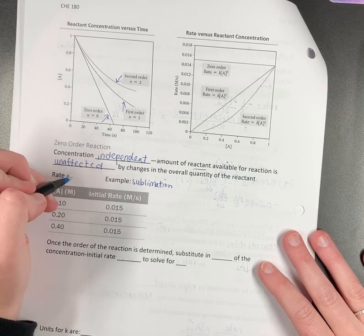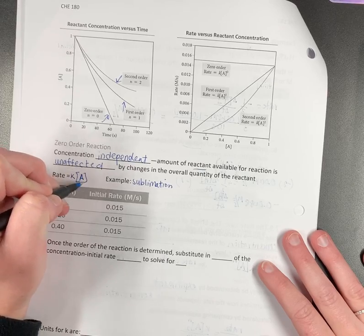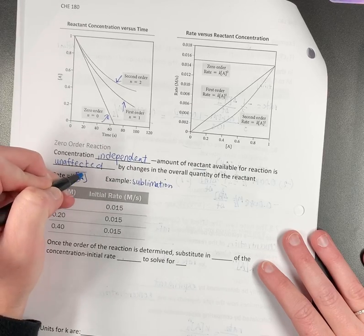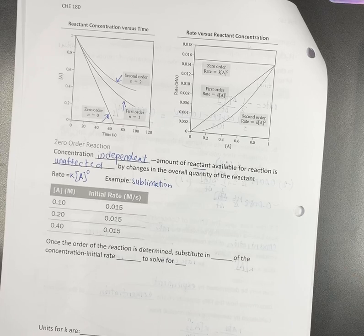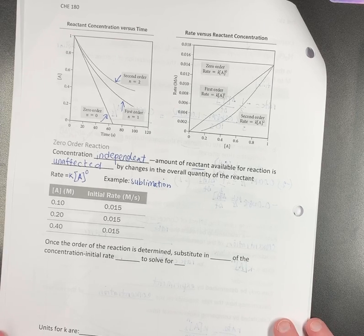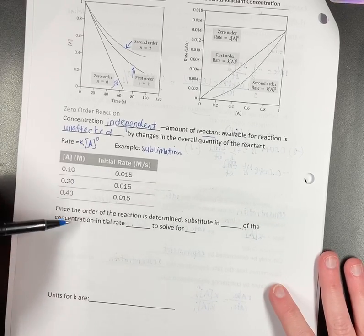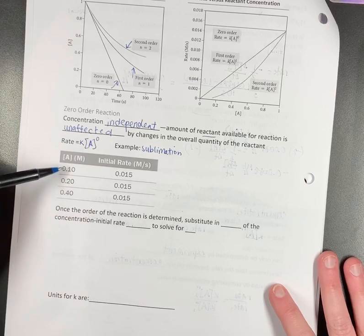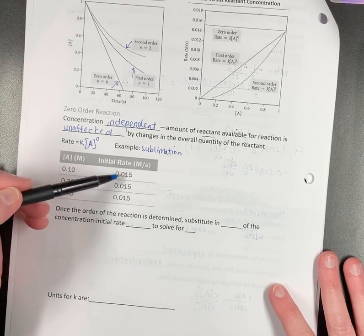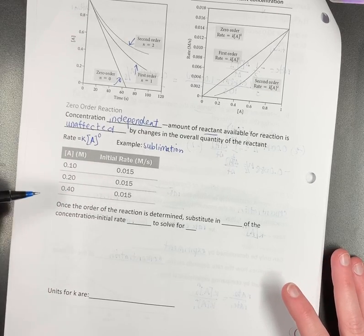The rate will be expressed as K times the concentration of whatever you're measuring to the zero power. You can see that even as concentration is changing, the rate does not change. These are really easy to pick out.